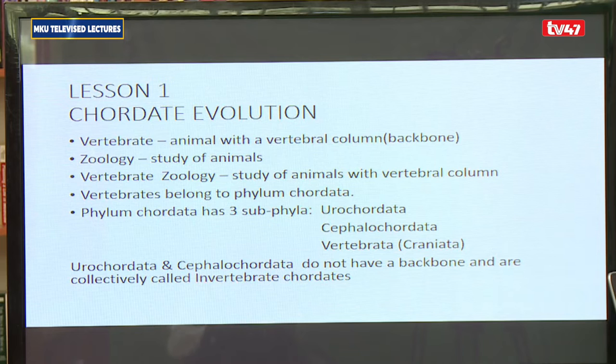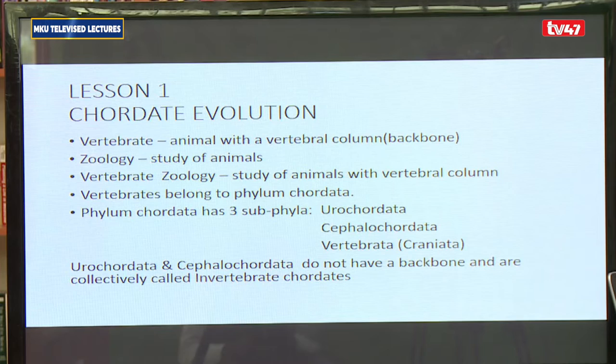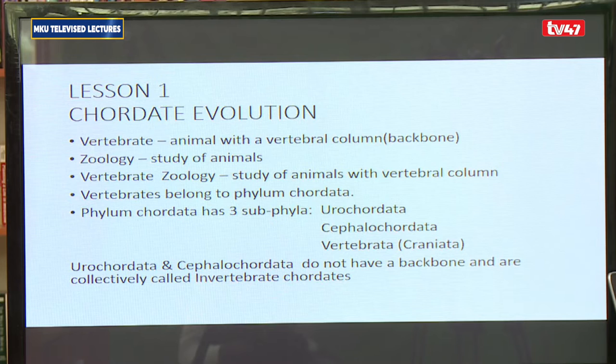For the first two subphyla — the urochordata and cephalochordata — the organisms in these two subphyla do not have a vertebral column or a backbone. Animals that do not have a vertebral column are referred to as invertebrates. But because the urochordata and cephalochordata are in the phylum chordata and have some of the basic characteristics that chordates have, yet do not have a vertebral column, they are referred to as invertebrate chordates.